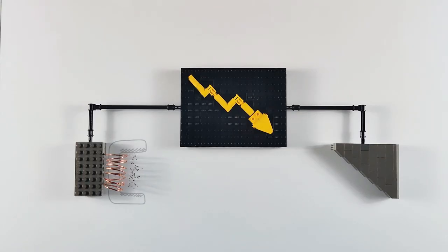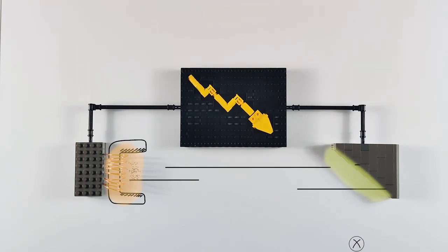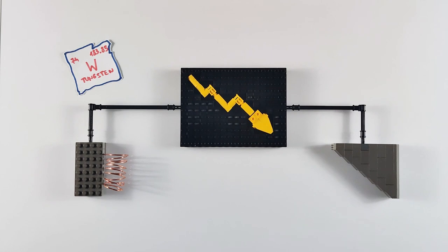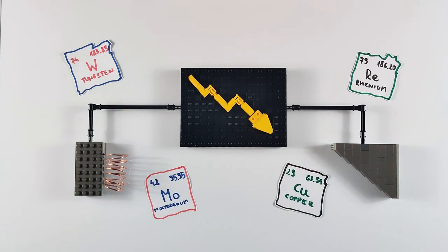But let's get back to the anode. Because it is constantly hit by electrons, its surface temperature can reach over 2000 degrees Celsius. That is why the anode is made of materials with high melting temperature, for example tungsten or uranium and materials that can efficiently carry away heat, such as copper or molybdenum.